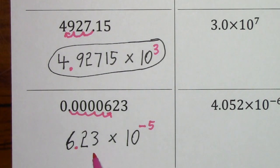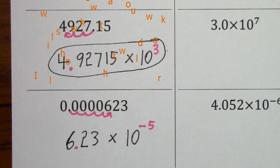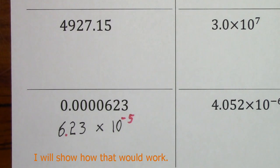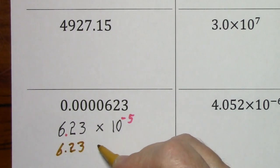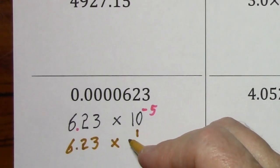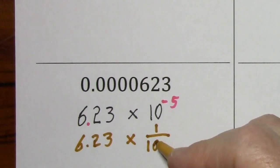If we were to multiply 6.23 times 10 to the negative fifth, we would get back to our original number. That would really be 6.23 times 10 to the negative fifth is one over 10 to the fifth, or a one with five zeros.